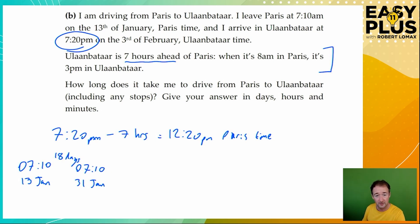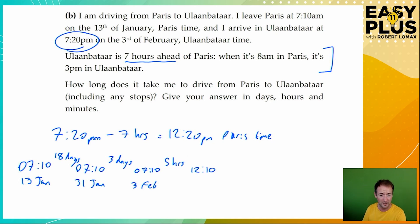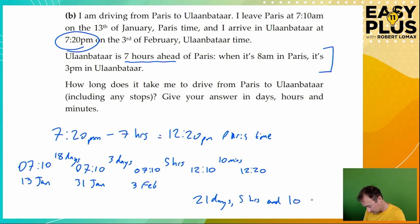Now we want to get to the 3rd of February — again, the same time of day — so that's 3 more days. Now we're on the right day but we need to get from 7:10 to 12:20. Getting from 7:10 to 12:10 is five hours — you can visualize a clock face, or just do 12 minus 7. And then getting to 12:20 is another 10 minutes. Adding this all together, we have 21 days, five hours, and 10 minutes.